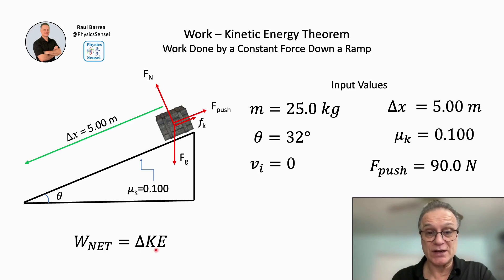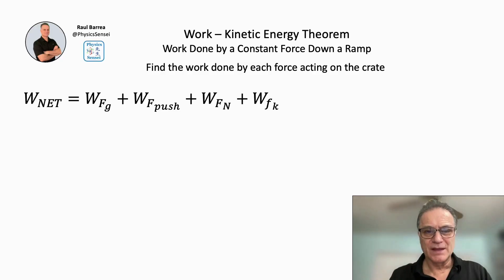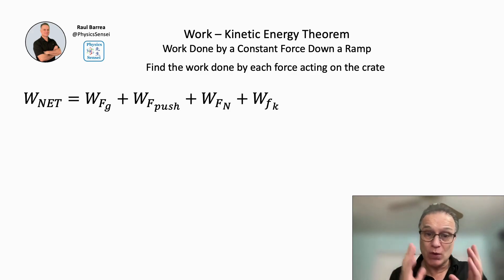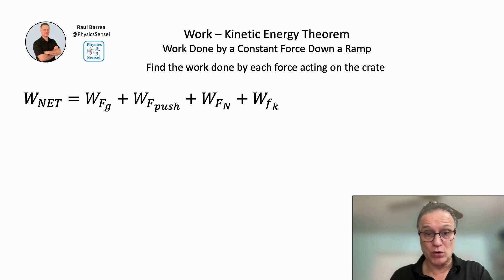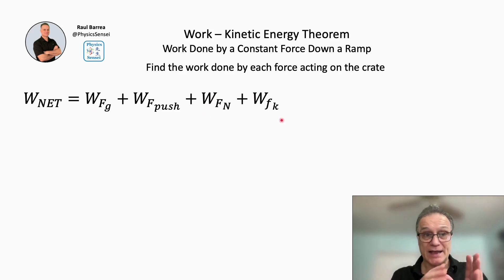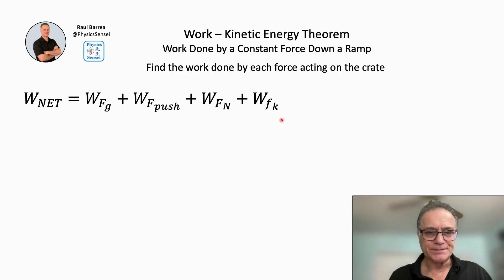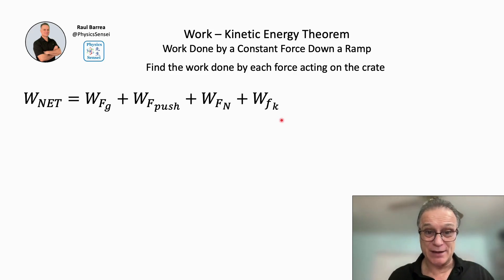We're going to use the net work equals the change in kinetic energy as our main equation for this problem. To find the net work, we need to find the work done by each individual force: the gravitational force, the push force, the normal force, and the kinetic friction force. It's important to list all the forces to make sure we're not missing anything — even if we already know that one of these will be zero.